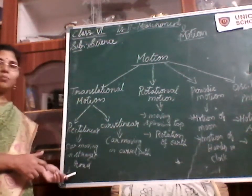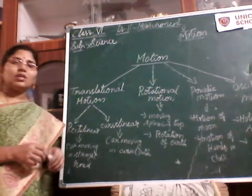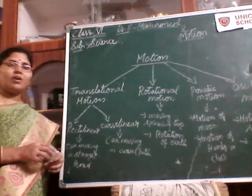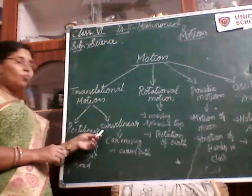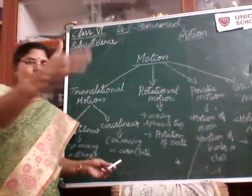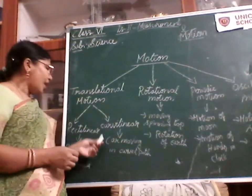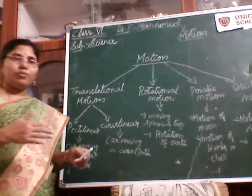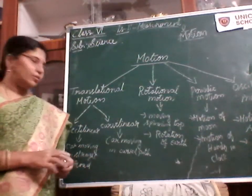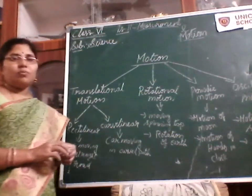An example of rectilinear motion is a car moving on a straight road. Coming to curvilinear motion — the name itself tells us it involves curves. The movement of an object along a curved path is called curvilinear motion. For example, a car moving on a curved path.